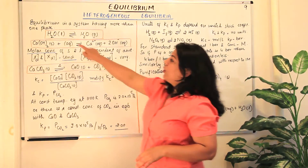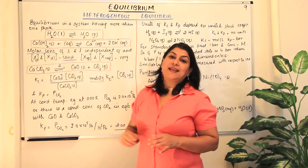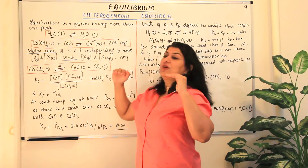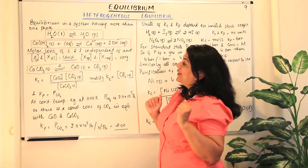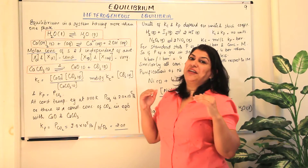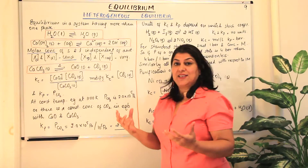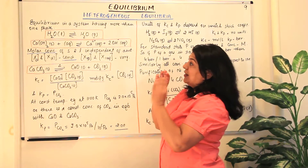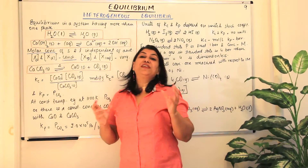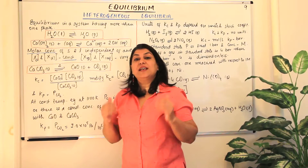An example is water liquid in equilibrium with water gas at its boiling point — water and water vapor are in equilibrium with each other. The temperature is fixed and the two states are in equilibrium. Since you have two physical states of water, although the reactant and product are the same substance, they are in two different physical states, therefore this is a heterogeneous equilibrium.